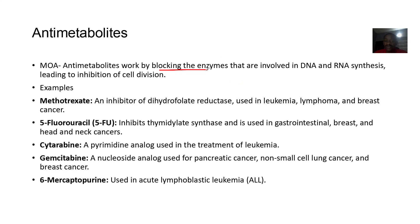Anti-metabolites usually block the enzymes involved in DNA and RNA synthesis. DNA and RNA production is needed for the cell to keep living and producing copies of itself, so if you block those enzymes, you render the cell helpless. Drugs in this class include methotrexate, 5-fluorouracil, cytarabine, gemcitabine, and 6-mercaptopurine.